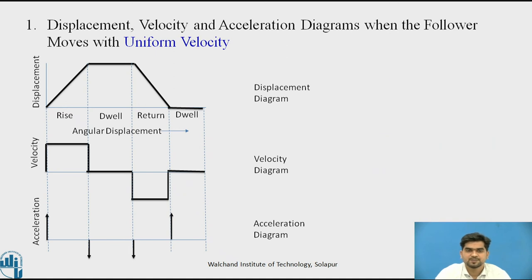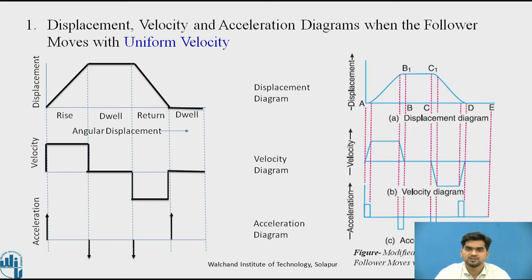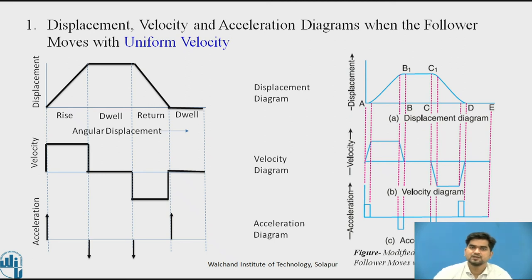In actual practice, we do not get infinite accelerations. So we have done some modifications in the displacement, velocity, and acceleration diagram. This is the modified displacement, velocity, and acceleration diagram when the follower moves with uniform velocity. In the velocity diagram we have given a uniform velocity, so we are getting the acceleration at a finite level. For getting the uniform velocity, we have used a parabolic nature of the displacement diagram, and only then do we get the acceleration at a finite level.